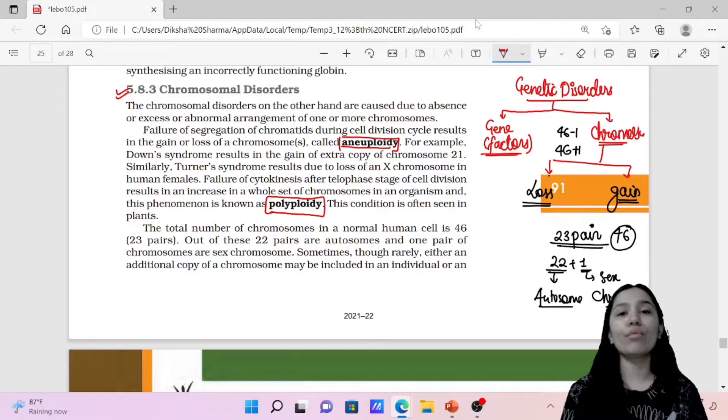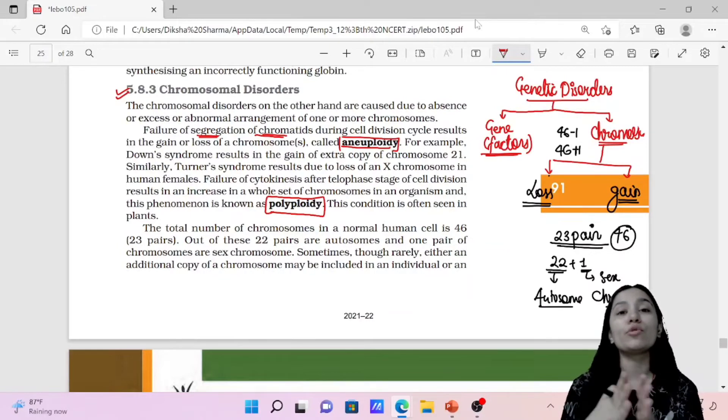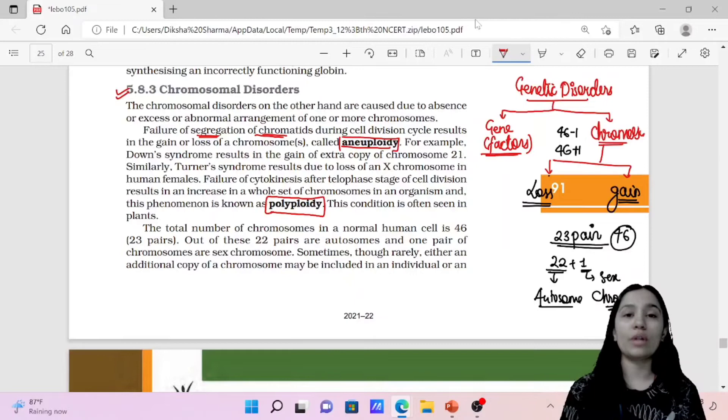Why is this chromosomal disorder? When there is cell division, when chromatids are separated in cell division, they are not properly separated. Or they are not properly divided at the time of cell division. That is why chromosomes are not properly equally divided, that is why it is chromosomal disorder.